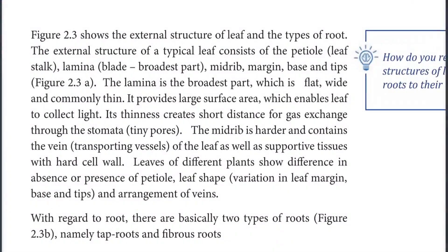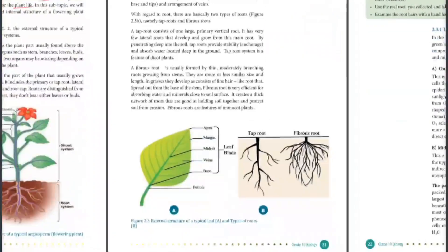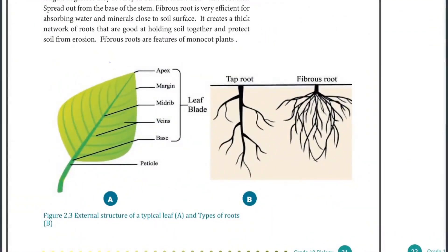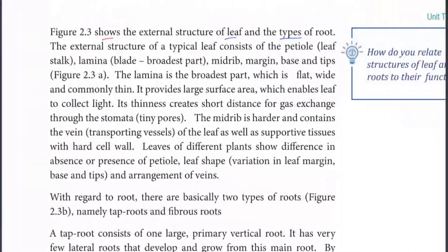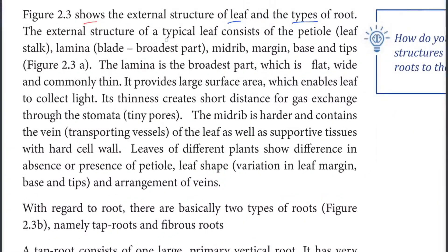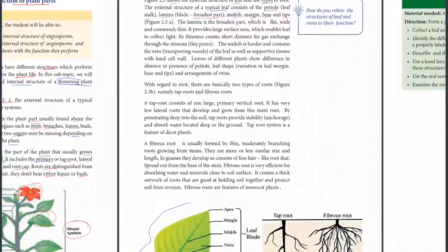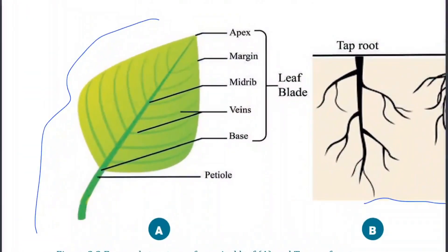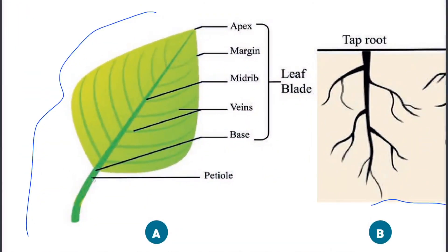Figure 2.3 shows the external structure of the leaf and the types of fruit. The external structure of a typical leaf consists of the petiole or leaf stalk, lamina or blade, the broadest part, rib, margin, base, and tips.